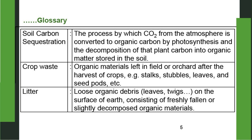Crop waste: organic materials left in a field or orchard after the harvest of crops — for example, stalks, stubbles, leaves and seed pods. Litter: loose organic debris such as leaves or twigs on the surface of the earth, consisting of freshly fallen or slightly decomposed organic materials.